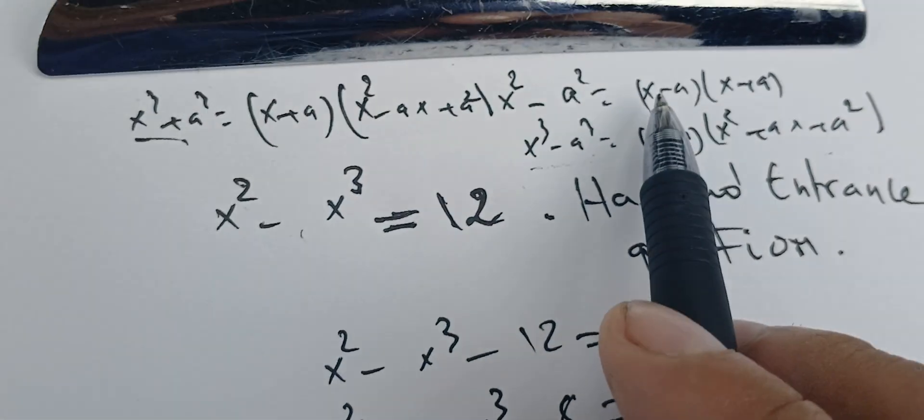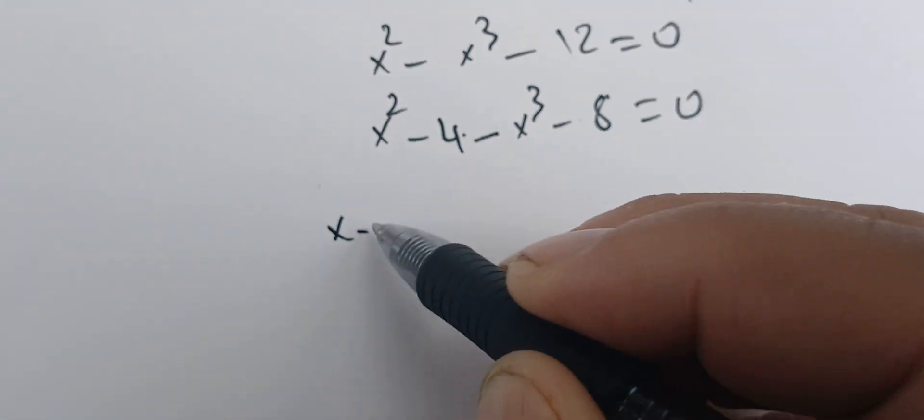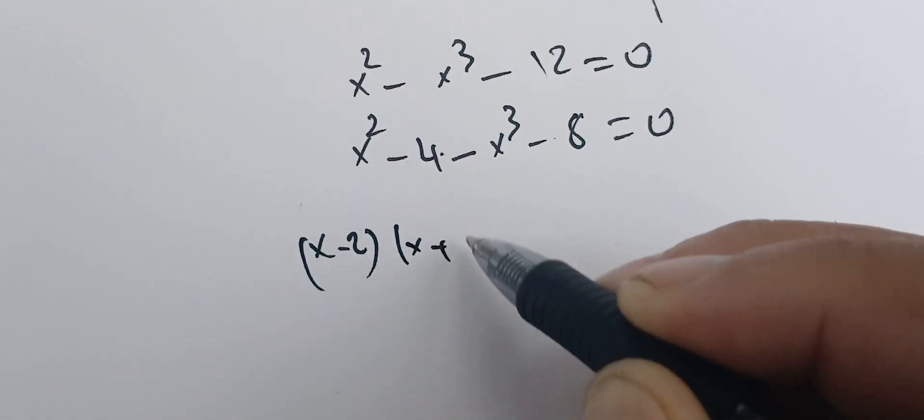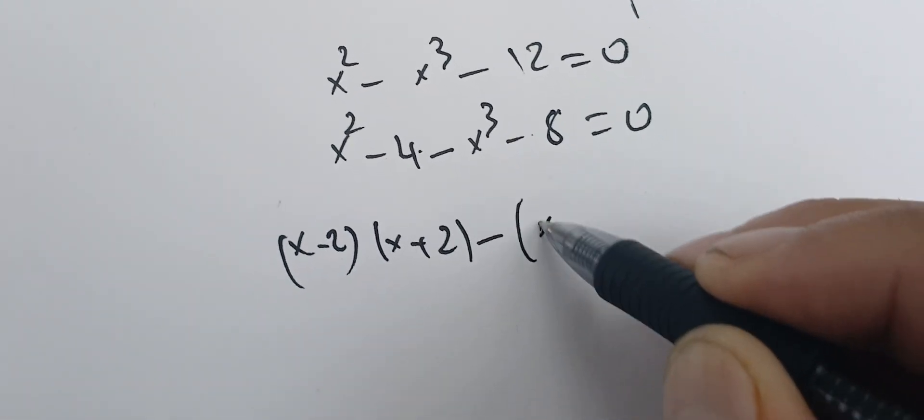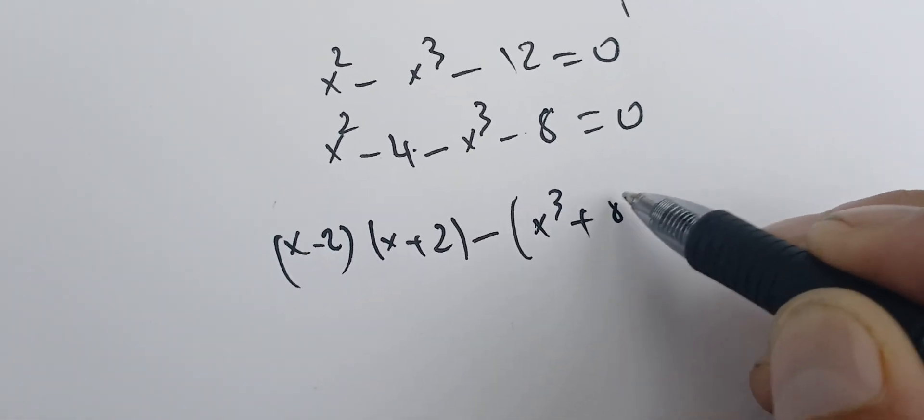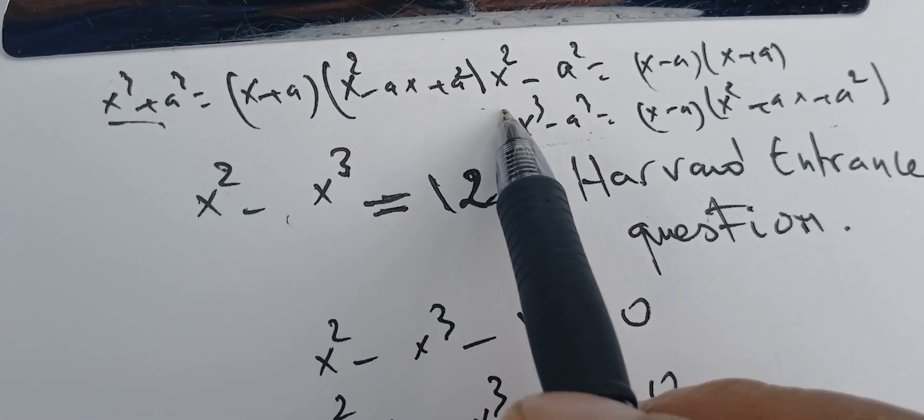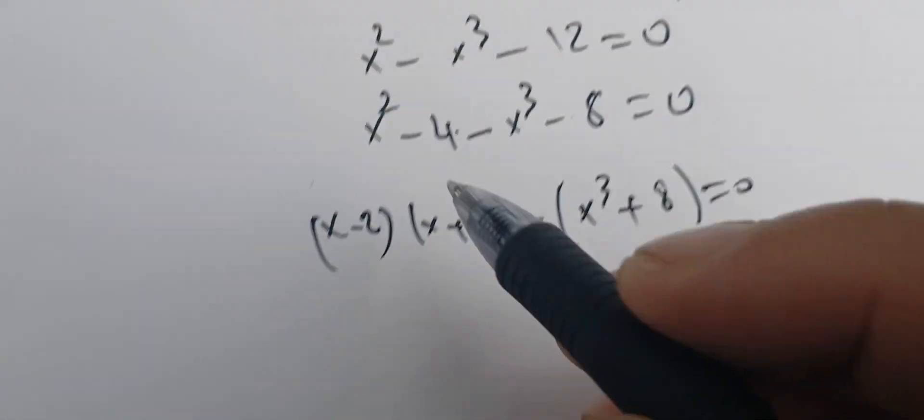Now we're going to use these identities. Here we have x minus 2 times x plus 2, and this one here is minus x cubed plus 8 equals zero. So we're going to use this identity here.